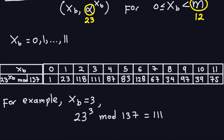If you were doing this on a computer, you'd save this table for later lookup. The first row is just the numbers 0 to 11. The second row requires computing 23^xb mod 137 for each value. It's a lot of computation but it can be done.